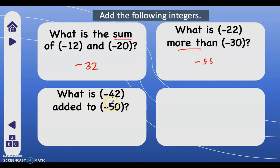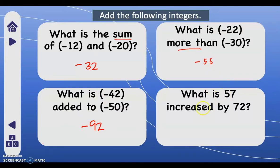Next: what is negative 42 added to negative 50? We add 50 plus 42, we have 92, then copy the sign of the numbers — they are both negative — so we write negative 92. Next: what is 57 increased by 72? We just add the two numbers — we have 129. They are both positive, so the answer is positive 129.